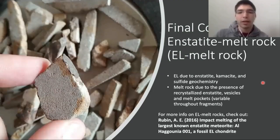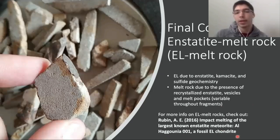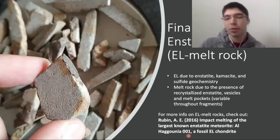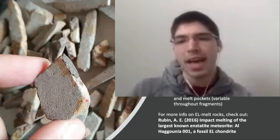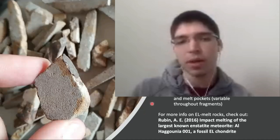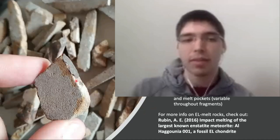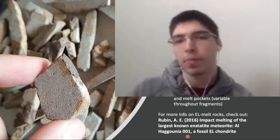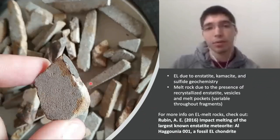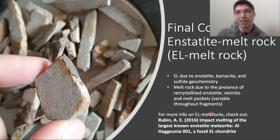If you'd like to learn more on EL melt rocks, there's a very cool research article by Dr. Alan Rubin from 2016, called 'Impact Melting of the Largest Known Enstatite Meteorite, Alhogonia 001, a Fossil EL Chondrite.' I have actually taken a look at Alhogonia 001 — there are a lot of pairings to this EL melt rock. The only difference I noticed was the grain size being a little smaller, and I did see some fusion crust, so it looks to be a little more fresh. I can't definitively say if this is paired with it or not, but it does have similarities — then again, they're both EL melt rocks.